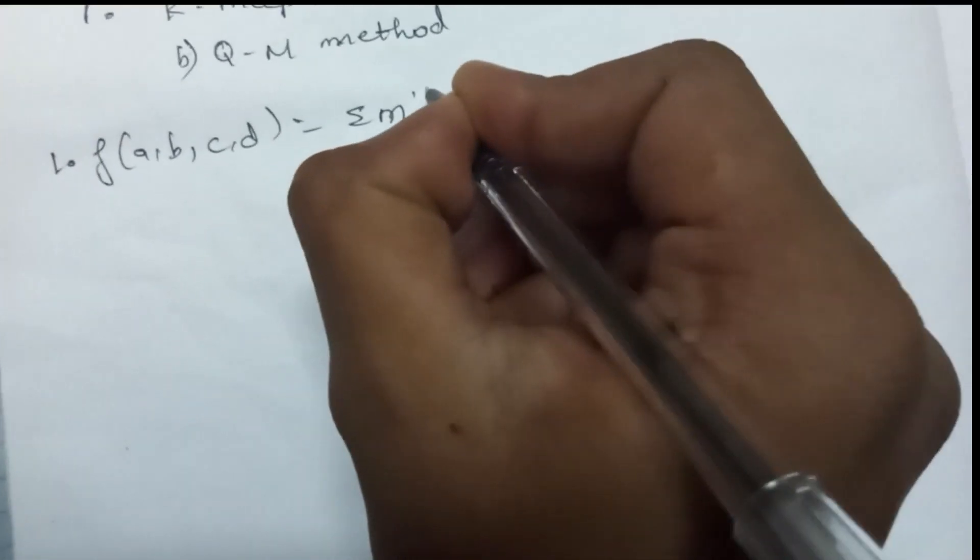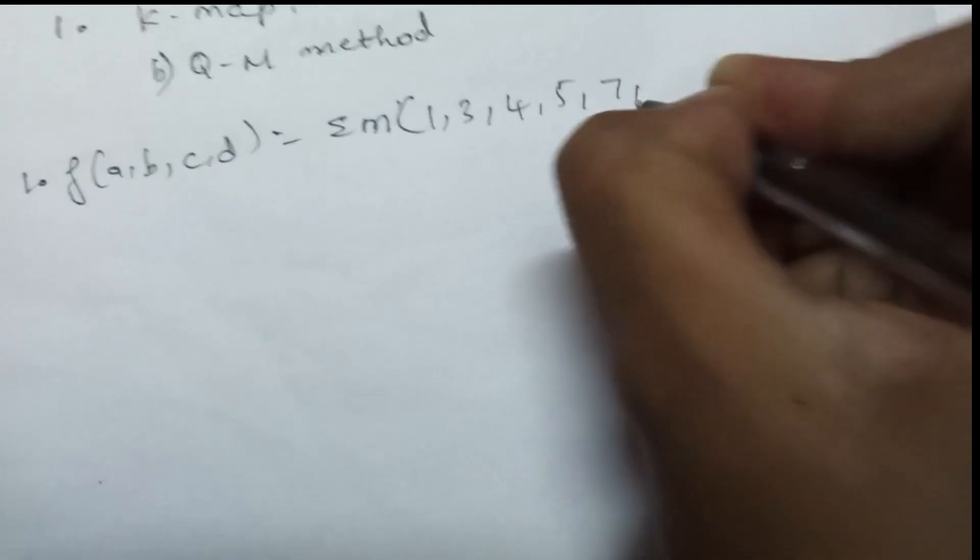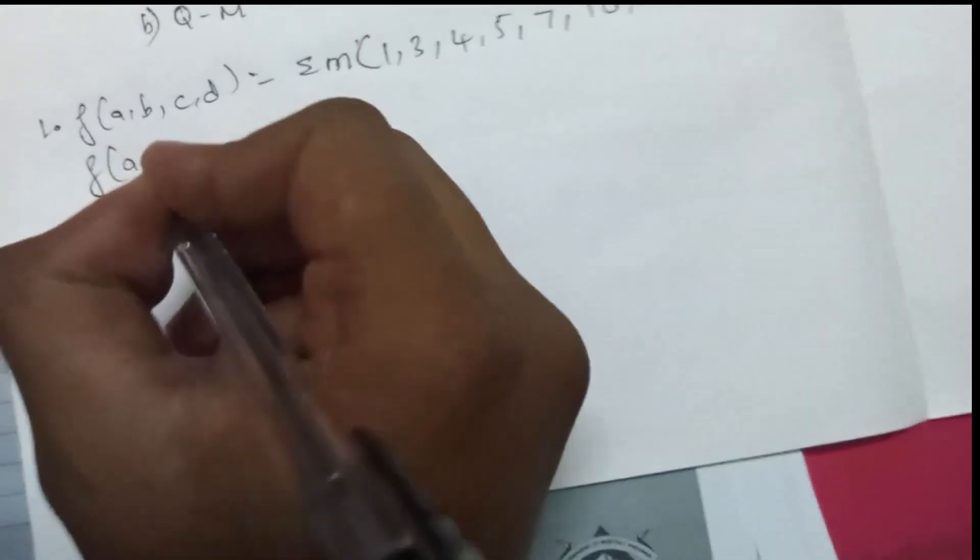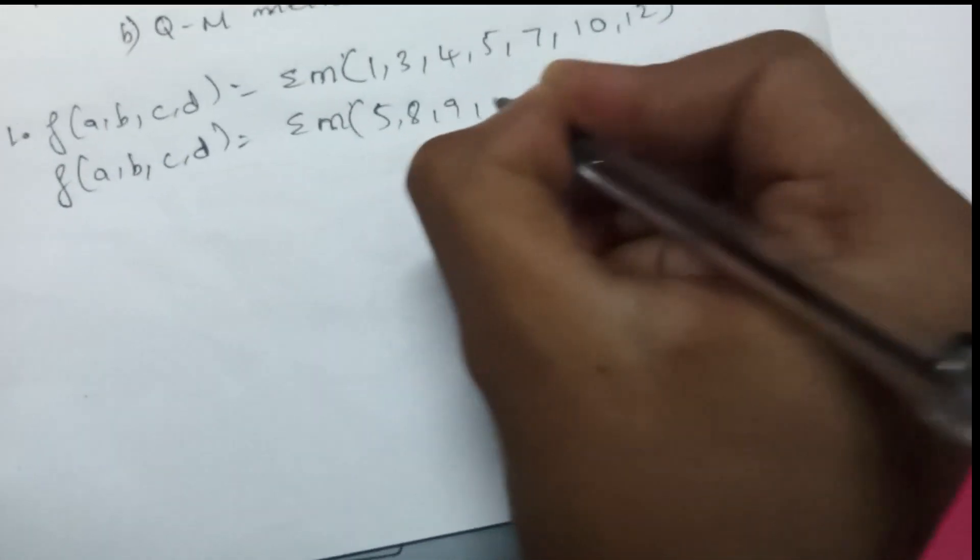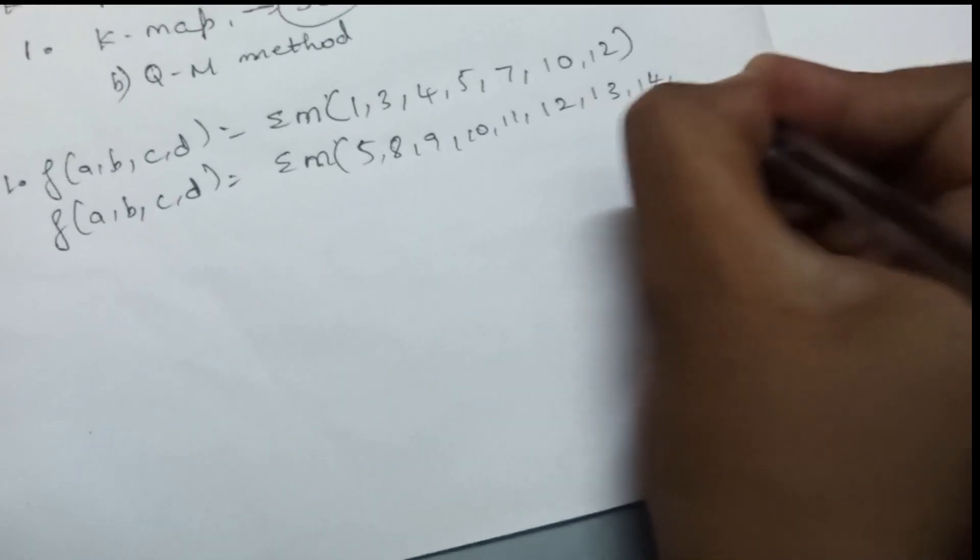First question: if F(A,B,C,D) equals summation of minterms 5, 8, 9, 10, 11, 12, 13, 14, 15. This is SOP - if they don't specify SOP or POS in the question, go with SOP, which is sum of products. Second one is Quine-McCluskey method problem: solve for prime implicants. F(A,B,C,D) equals summation of minterms 0, 2, 3, 4, 8, 10, 12, 13, 14.